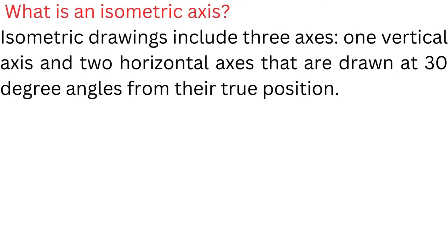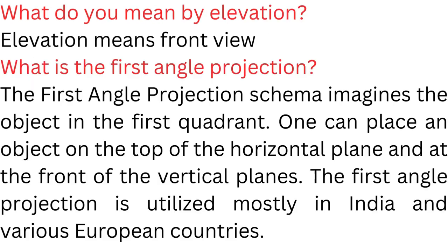What is an isometric axis? Isometric diagrams include three axes — one vertical axis and two horizontal axes — that are drawn at 30 degree angles from their true position.